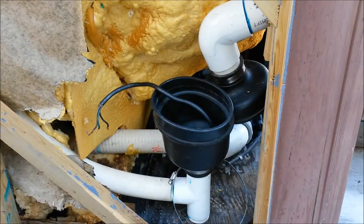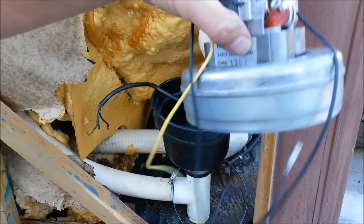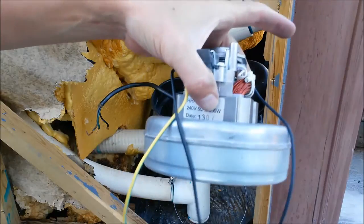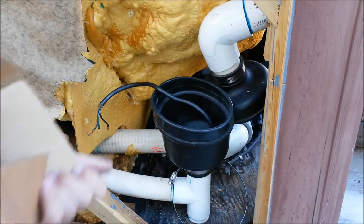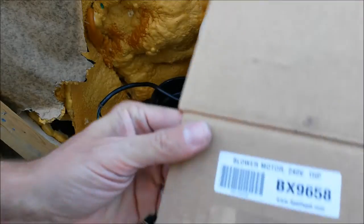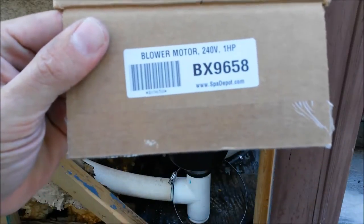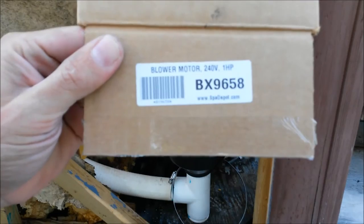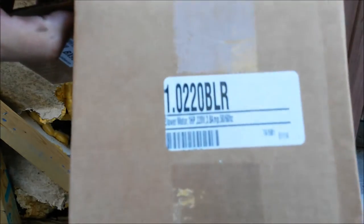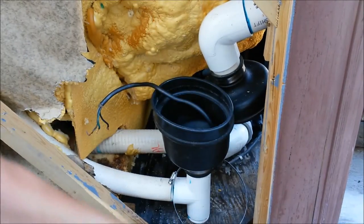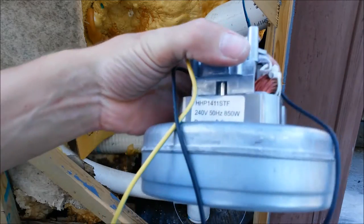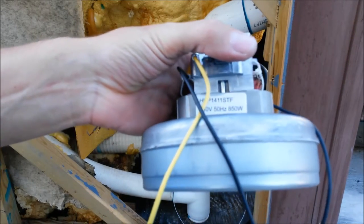So check out that video if you have 120 volt, but the process will be exactly the same. This one here just happened to be part number BX9658. Amatek does make one of these as well. But this one came from Spa Depot and it's basically the same as the Amatek motor, except it was a little bit less.